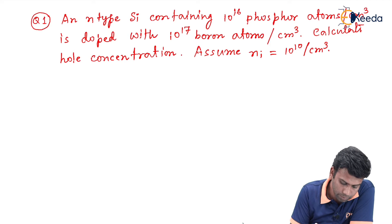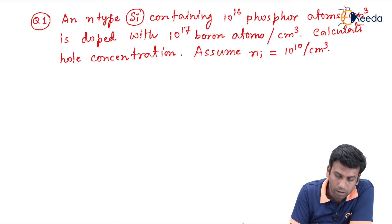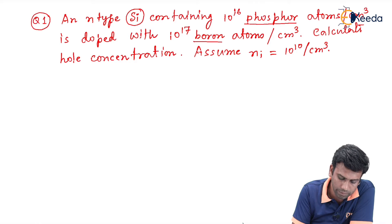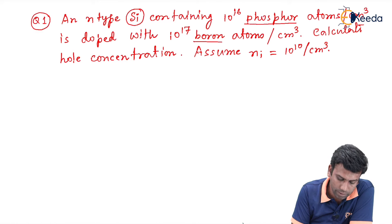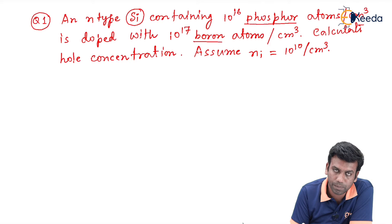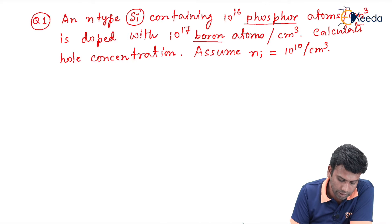From the problem we can see that the silicon material is doped with two types of impurities. The first one is phosphorus atoms and the second one is boron atoms. Phosphorus is a group 5 impurity and boron is a group 3 impurity. So both donor and acceptor impurities have been introduced inside the silicon material, making it a compensated semiconductor.